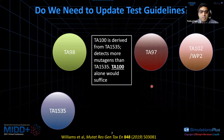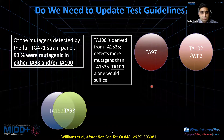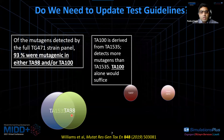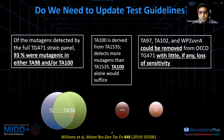A second important conclusion was that of all mutagens detected by the TG471 strain panel, 93% of the compounds were mutagenic in either TA98 and/or TA100 — so we can focus on just those two. The last important finding was that TA97, TA102, and WP2 could be removed from the test guidelines with little loss of sensitivity, as these strains detect only about 5 to 6% of compounds.